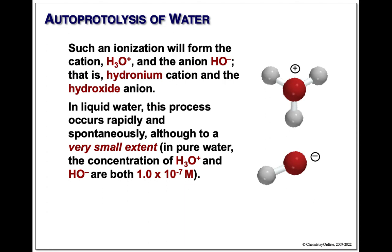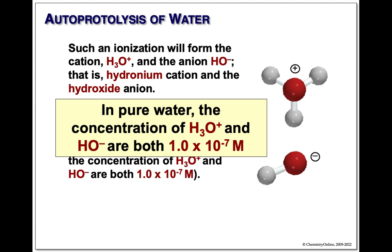This is called the autoprotolysis of water. Not only does this exist, but we know the concentration of hydronium and hydroxide in pure water — it's 10⁻⁷ mole per liter each. In pure, neutral water, hydronium and hydroxide are both 10⁻⁷ mol/L. This is a very, very important concept that you need to remember.